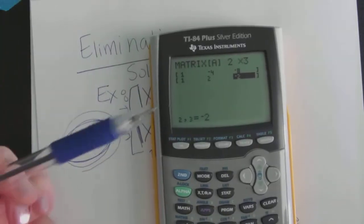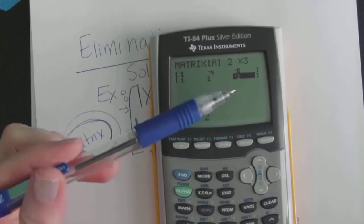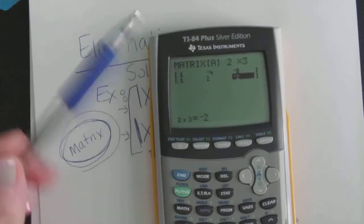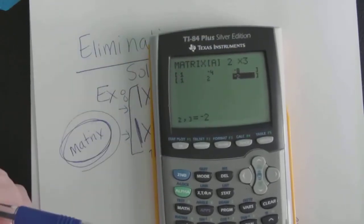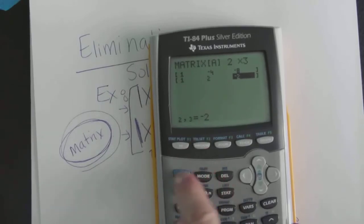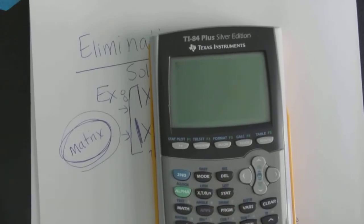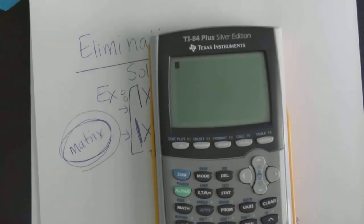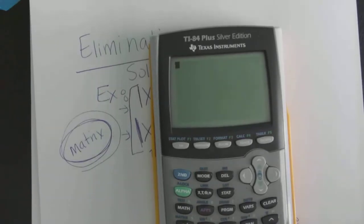All the data is stored in there now into our two by three matrix. Now the next thing you have to do is completely get out of here. Once you have your data typed in and you've edited your matrix you want to use the quit. So second quit or second mode and you want to come to a blank screen like okay I've entered it in and now I'm out of there.